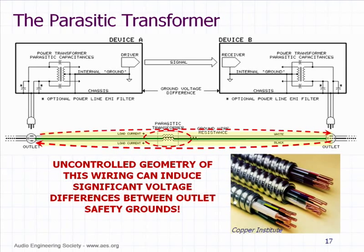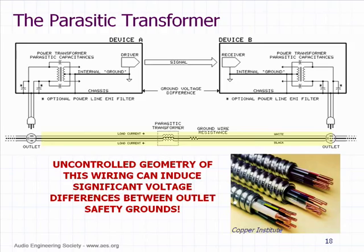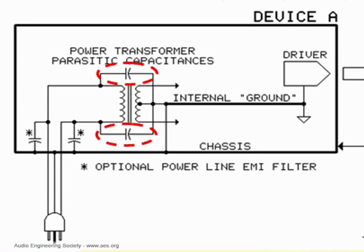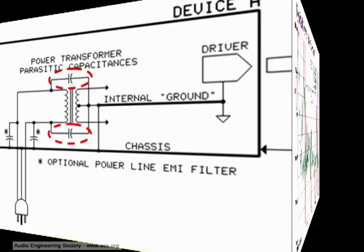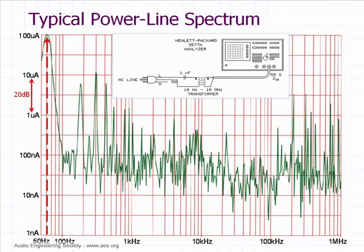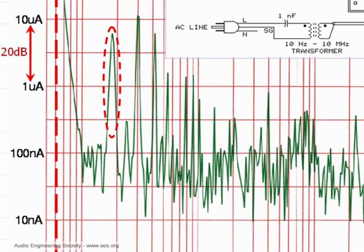Other people have tried to ascribe the effect to leakage currents. Leakage currents are normal because there are unavoidable capacitances inside equipment between the active side of the power and ground. By definition, a capacitor will charge. So we see most of our energy at 60 Hz where it belongs, at least in the US. But look how much energy we have here at 180 Hz, 300 Hz, and 420 Hz — these are the third, fifth, and seventh harmonics of 60.